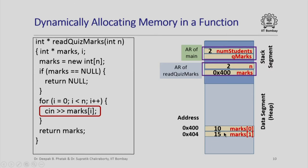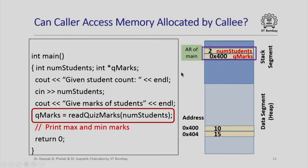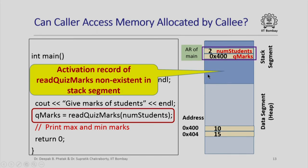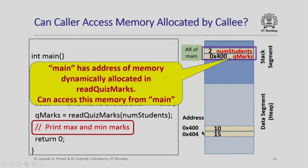In the loop, let us say I have read in the two integer marks 10 and 15. When I return `marks`, the value 0x400 is returned to the main function and the activation record of `read_quiz_marks` is gone. In the main function, since the return value is assigned to `q_marks`, `q_marks` gets the value 0x400. Note that the two array elements allocated in the data segment have stayed, but I can no longer call them `marks[0]` and `marks[1]` since I have returned from `read_quiz_marks`. Although the activation record is gone, the dynamically allocated memory persists, and the main function has the address of that memory so it can access it.